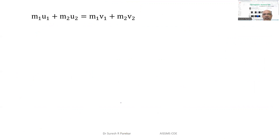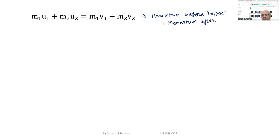We have two equations to consider. The first equation is conservation of momentum: momentum before impact equals momentum after impact. This gives us m1*u1 + m2*u2 (initial momentum) equals m1*v1 + m2*v2 (final momentum).